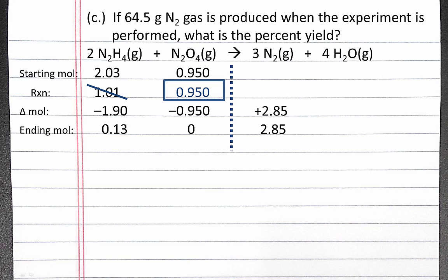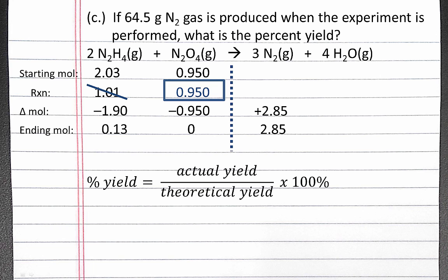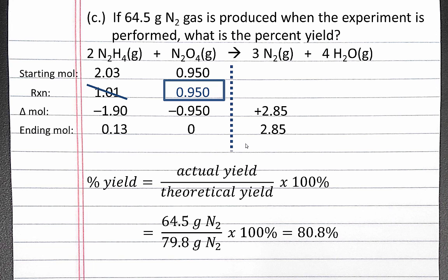To answer part C, we're given an experimental value for how much product is produced: 64.5 grams of N2 gas. The amount actually produced when the experiment is performed is our actual yield. The amount we calculate using stoichiometry is our theoretical yield. So to calculate percent yield, we actually produced 64.5 grams of N2 gas, and theoretically we could have produced 79.8 grams of N2 gas — which is what we calculated for part A — times 100%, and we'll get 80.8%.